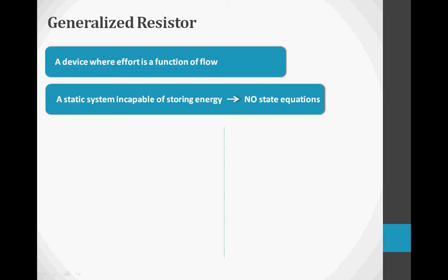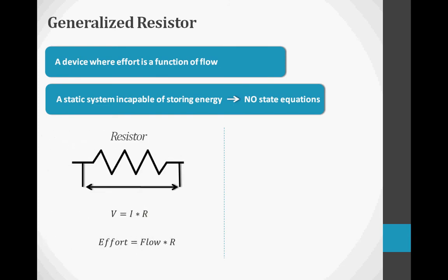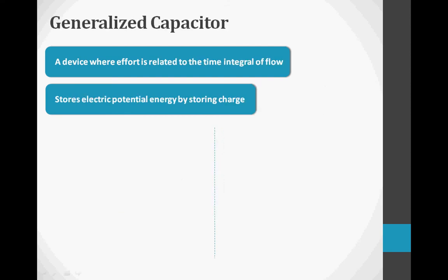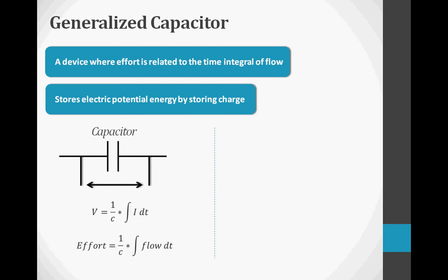These dynamic systems also have generalized resistors. Generalized resistors are devices where effort is a function of flow, and they are incapable of storing energy. In an electrical system, the effort variable, voltage, is proportional to the flow variable, current. In a mechanical system, the effort variable, force, is proportional to velocity. A final component of these dynamic systems is a generalized capacitor — a device where effort is related to the time integral of flow. Generalized capacitors have the ability to store energy. In an electrical system, a capacitor has the ability to store charge.